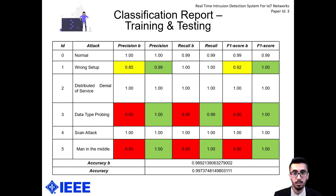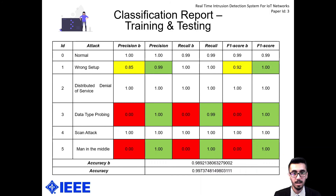This is the classification report for the training and testing data. Columns with the letter B, like precision-B or recall-B, represent data from before oversampling; the other columns are from after. Precision tells us: of all things classified as attacks, how many actually are attacks — so low precision means a high false positive rate. Recall tells us: of all actual attacks that occurred, how many were detected. Low recall means missed attacks, which is critical — even a high false positive rate can be addressed by security analysts, but missing actual attacks is a real problem. F1 score is the harmonic average of precision and recall. As you can see from the table, oversampling improved performance metrics for wrong setup, data type probing, and man-in-the-middle.